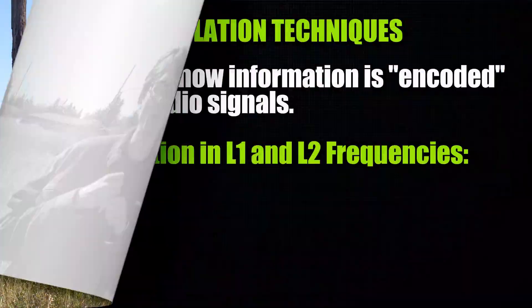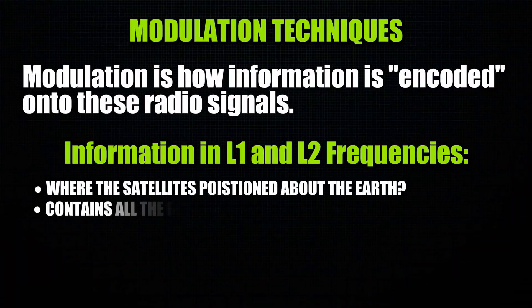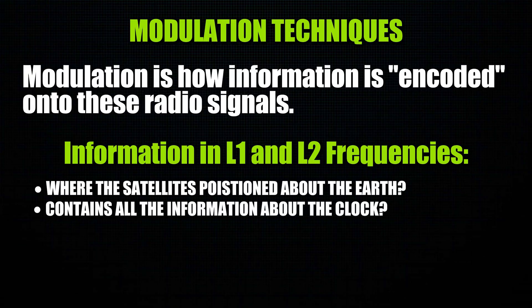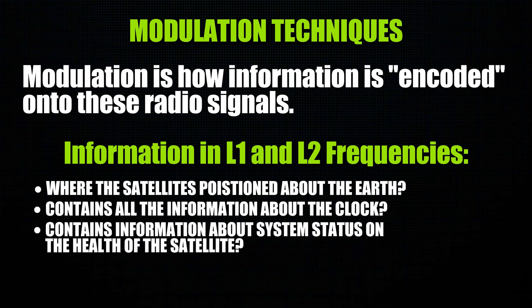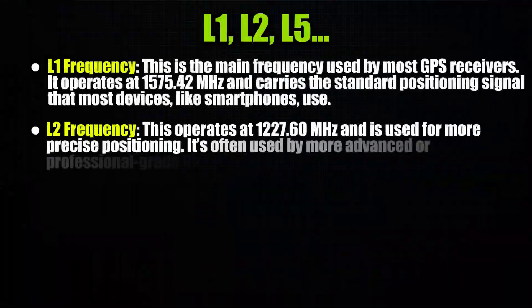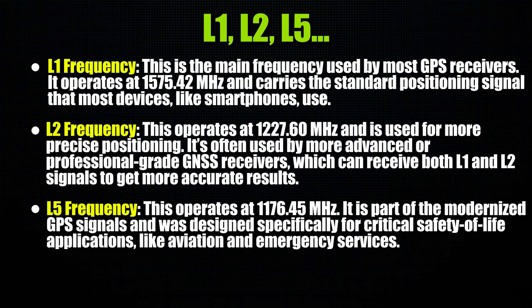Contained in these signals are various data messages. This includes information about where the satellite is positioned above the earth, clock information — because all GPS satellites are at the end of the day very accurate clocks — and system status on the health of the satellite. All of this is used by your receiver to calculate its position. Based on our satellites and various constellations, we'll have signals on different frequency bands: L1, L2, L5 — all of which our receiver uses and combines into its final solution.